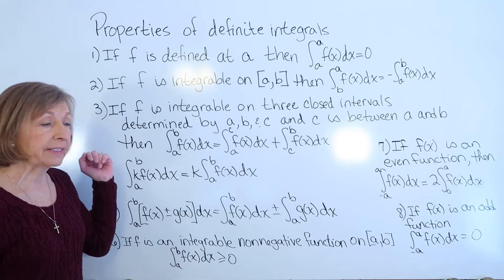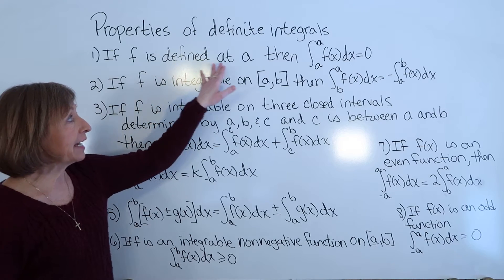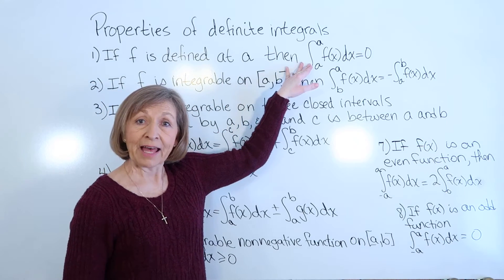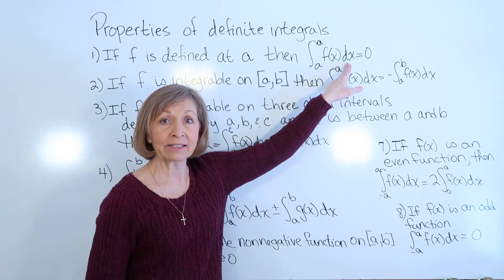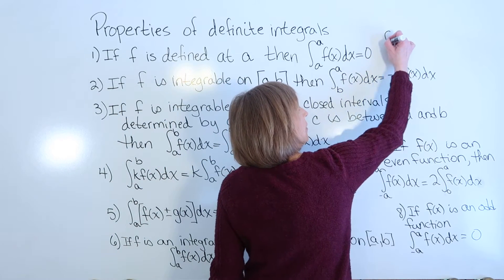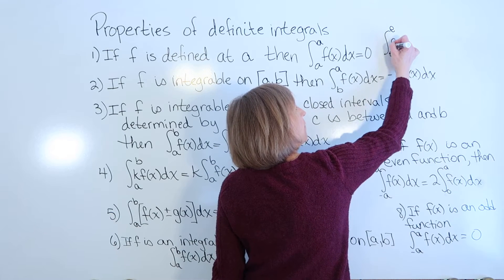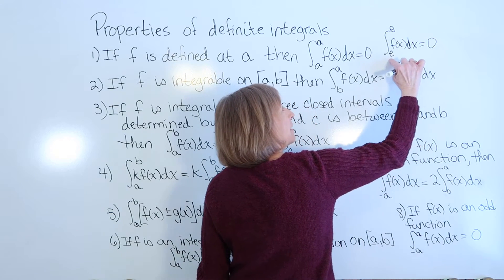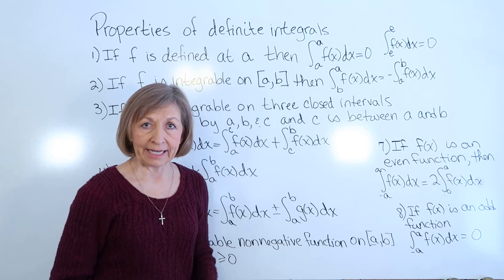The first property: if f is defined at a value a, then the definite integral from a to a of f of x dx equals zero. For example, the definite integral from e to e of f of x dx gives zero, because we started and ended at the same endpoints.